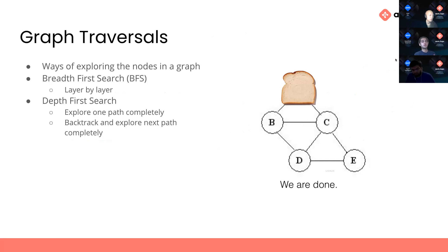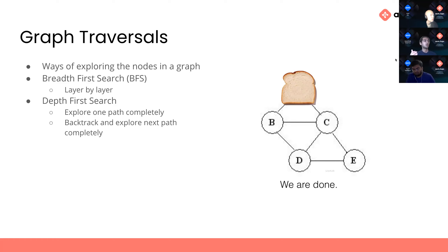Graph traversal algorithms are ways of exploring the nodes in a graph. There are two main ones: breadth-first search and depth-first search. Breadth-first search explores each path little by little, kind of exploring all paths simultaneously. Depth-first search explores one path all the way until you hit a dead end, then backtracks and explores the next path all the way through.